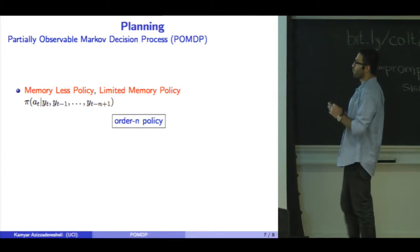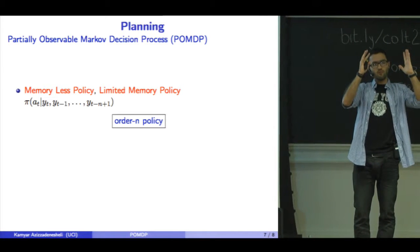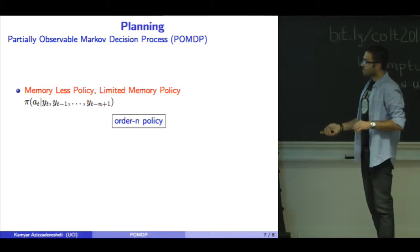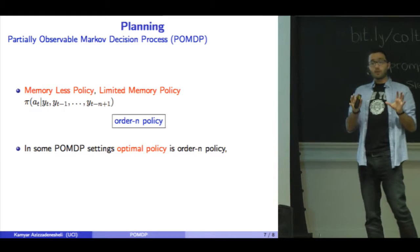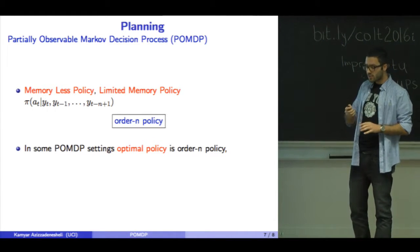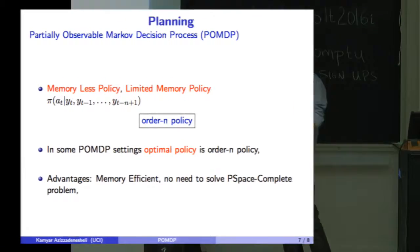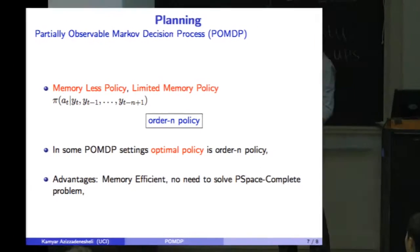What about memoryless or limited-memory policies? A policy maps observations, or a window of observations, to actions. Some POMDP models have optimal policies with memory, but let's focus on memoryless policies. A memoryless policy is a small lookup table with no need to solve the PSPACE-complete problem. It's easier and sometimes optimal.